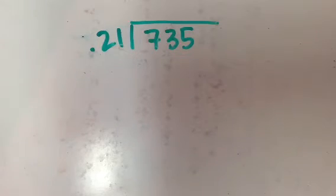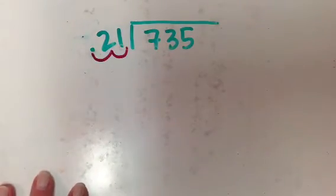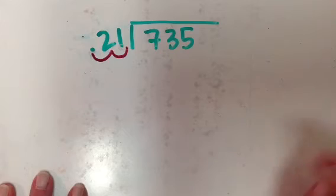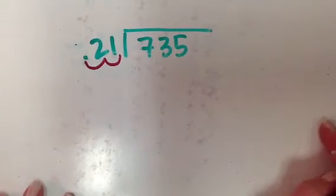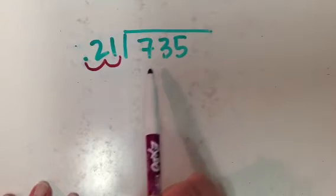And I'm going to divide it into 735. So I have to move my decimal point 1, 2 places, right? Because I've got it way out here, so I have to move it in order to deal with it, but again, whatever I do to the outside of the bracket I have to do to the inside of the division bracket.